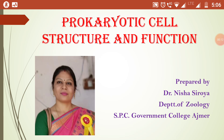Today our topic is Prokaryotic Cells. Now first, the basic types of cells. In a broad sense, a cell is differentiated into the cytoplasm and the nucleus, the former being surrounded by the plasma membrane and the latter by nuclear membrane or nuclear envelope. Both these structures play a vital role in cellular function. Based on the presence or absence of the nuclear membrane, the cells are classified into two basic types: prokaryotic and eukaryotic. Today we will focus on prokaryotic cells.